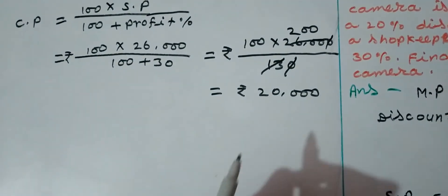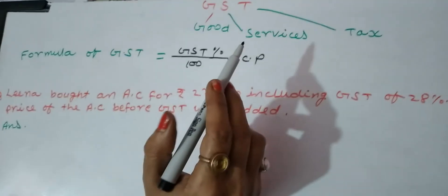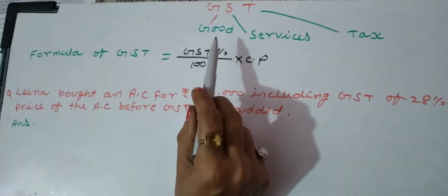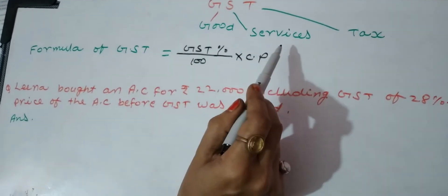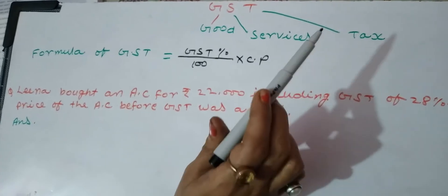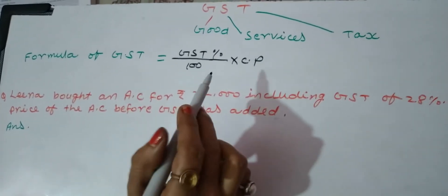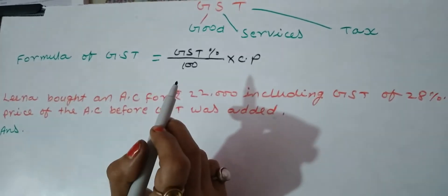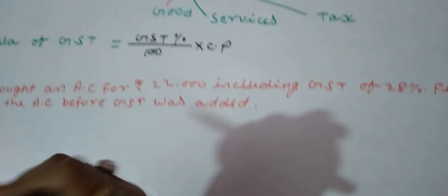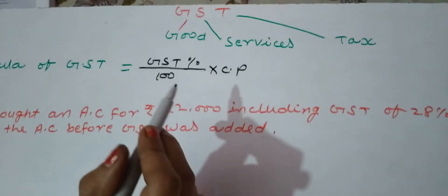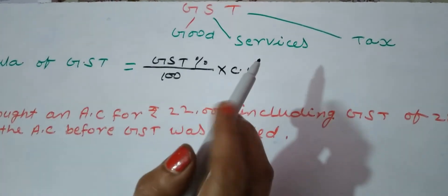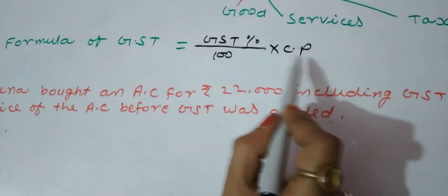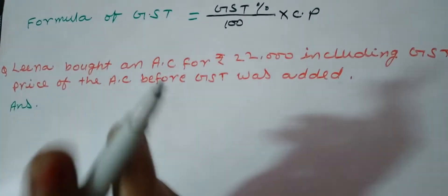The answer for CP comes to ₹20,000. The next part is GST. GST means Goods and Services Tax — G for Goods, S for Services, T for Tax. GST can be understood as a tax applied throughout India by the Central Government and State Government on any goods. The total tax combined is known as GST. The formula for GST is: GST = (GST% ÷ 100) × Cost Price.